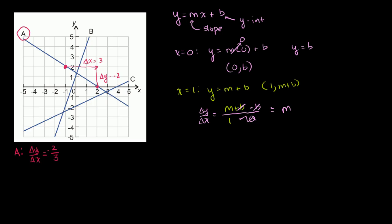When we go over by 3, we go down by 2. Or if we go over by 1, we go down by 2 thirds. So that's our slope — we've done half of the problem. Now we need the y-intercept. Where does this line intersect the y-axis? The slope is negative 2 thirds, so going back 1 to the left from a known point, we get y equal to 4 thirds at the y-axis. So b is equal to 4 thirds, and the equation is y is equal to negative 2 thirds x plus 4 thirds.